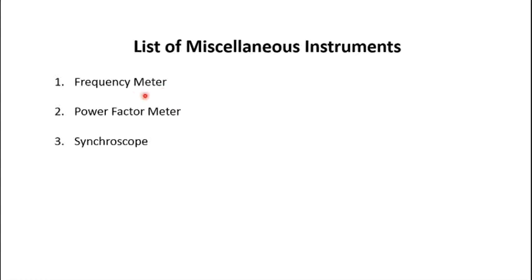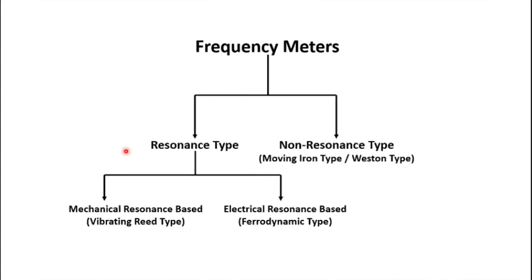We are going to discuss three classes of miscellaneous instruments: the first one is the frequency meter, the second one is the power factor meter, and the third one is the synchroscope. Frequency is a very important quantity as far as our electrical system is concerned, because there is a very strict norm regarding frequency limits.